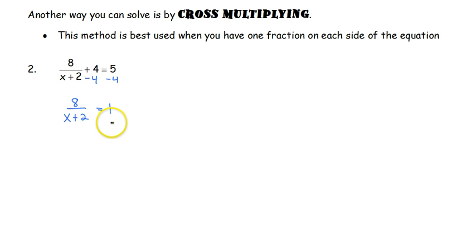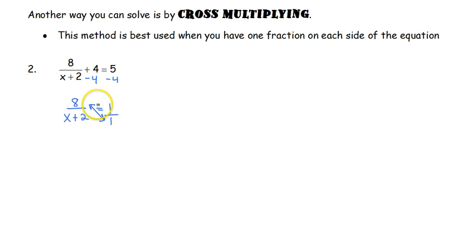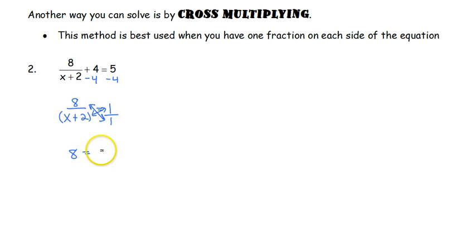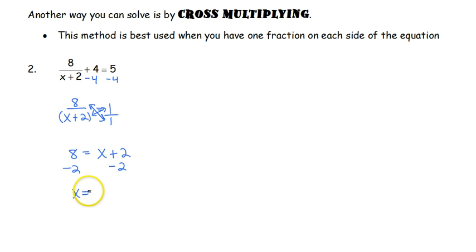Starting the cross-multiplication: we've got one fraction here, and we can turn the other term into a fraction by putting it over 1. We cross-multiply: 8 times 1 is 8, and then we have the expression x plus 2. We distribute — 1 doesn't make a difference — giving us x plus 2. We move the 2 over and get x equals 6.